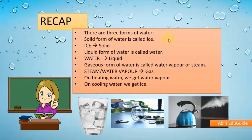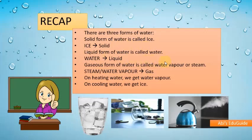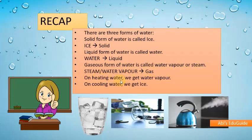There are three forms of water. The solid form of water is called ice. The liquid form of water is called water. The gaseous form of water is called water vapor or steam. On heating water, we get water vapor. On cooling water, we get ice.